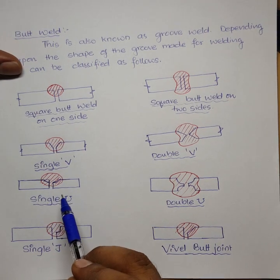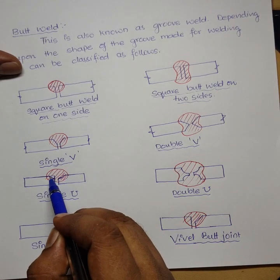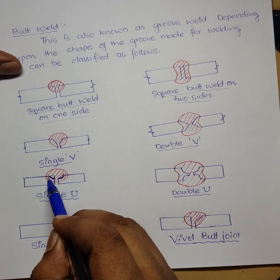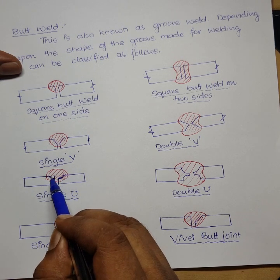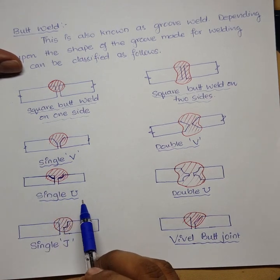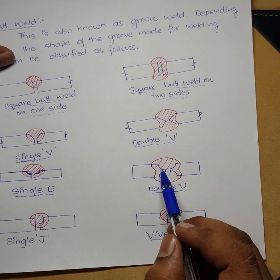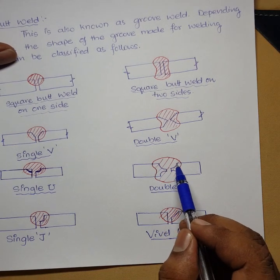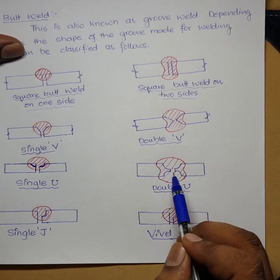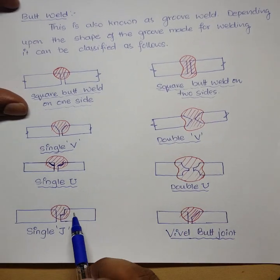There is a small mistake to note here. The next type has a U shape — when the two pieces join together they form a U shape, hence it is called a single U shape butt weld. Similarly, when both sides have a U shape and are welded together, it is a double U shape butt weld.